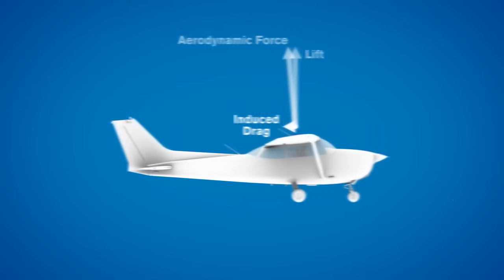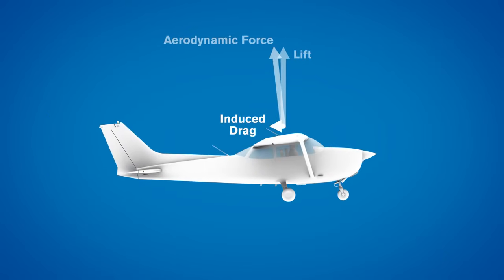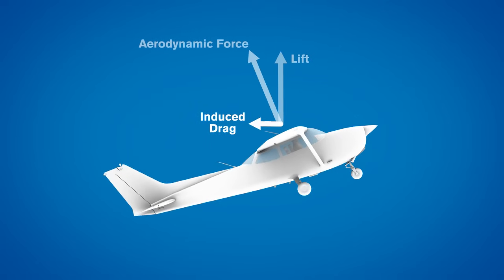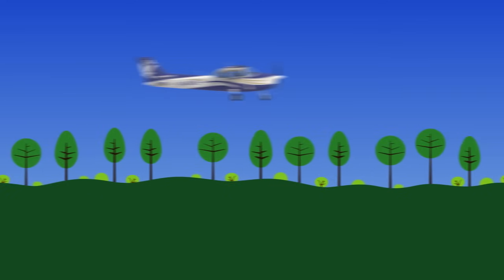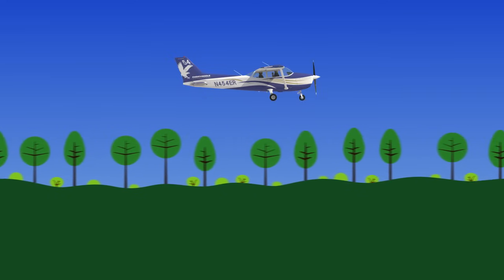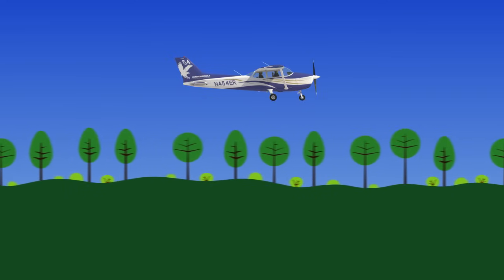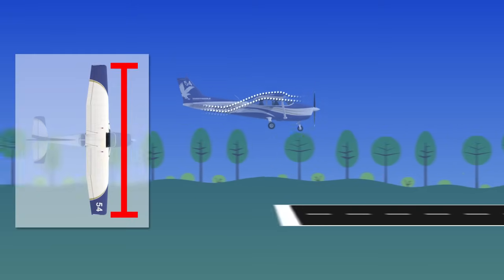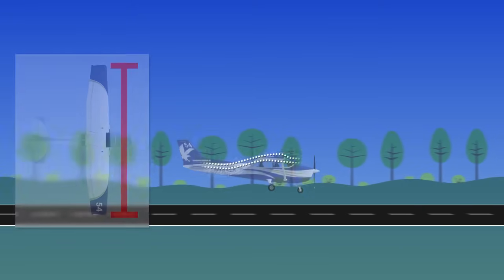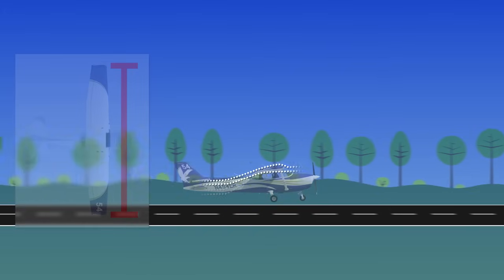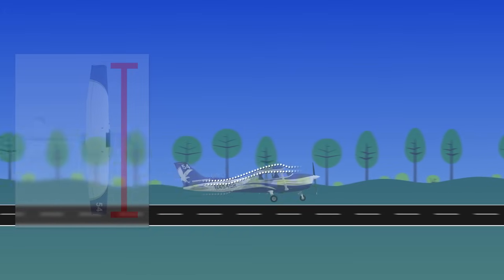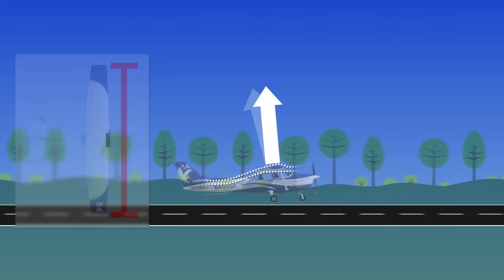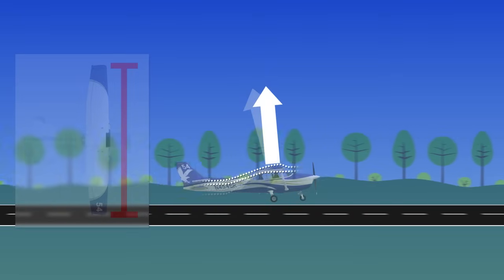This is because induced drag is worse when the airplane is flying at a high angle of attack, like when we are flying slowly. One way that a pilot can experience reduced induced drag is by flying in ground effect. When flying within a wingspan of the ground, the ground itself changes the downwash of the air flowing over the wings, shifting the lift vector forward and reducing the amount of induced drag.